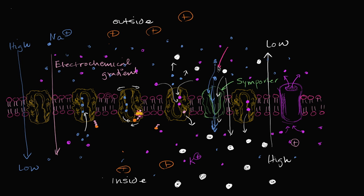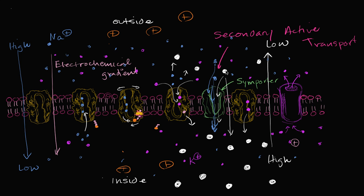This sodium-glucose symporter is secondary active transport. It uses the stored energy from the electrochemical gradient of one molecule — sodium — to drive the active transport of another molecule — glucose — going against its concentration gradient.